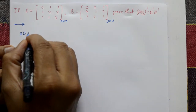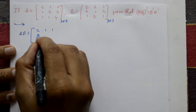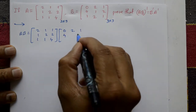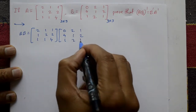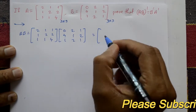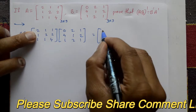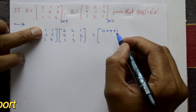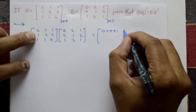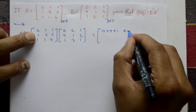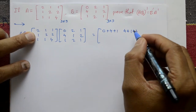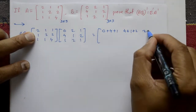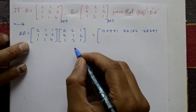Matrix A into B multiplication: A is [2,1,1; 1,2,2; 1,1,4] into B [0,2,1; 4,1,2; 1,2,1]. First row, first column: 2×0 = 0, plus 1×4 = 4, plus 1×1 = 1. First row, second column: 2×2 = 4, plus 1×1 = 1, plus 1×2 = 2. First row, third column: 2×1 = 2, plus 1×2 = 2, plus 1×1 = 1.